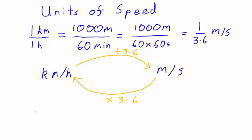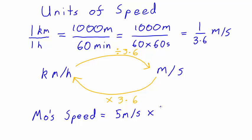Let's imagine the three amigos — Moe, Joe and Floe. Moe runs at 5 metres per second. What is Moe's speed in kilometres per hour? Well, Moe's speed is 5 metres per second, and we're going to multiply that by 3.6, and that gives us 18 kilometres per hour.